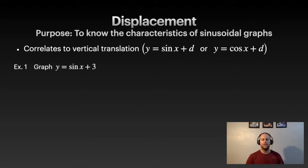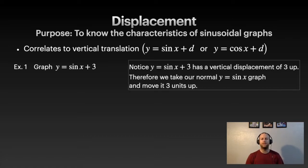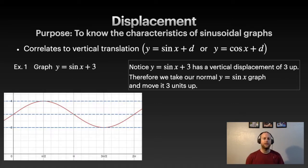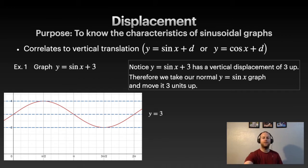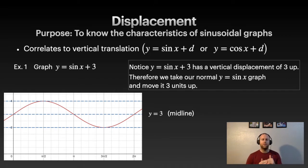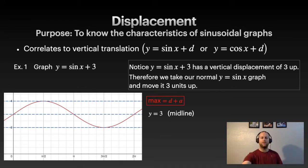Let's graph sin(x) + 3. With this we have a vertical translation 3 up, so we take our original sin(x) graph and move it up 3. I've put some dotted lines in because I want to talk about specific points. In the middle at y equals 3 is our midline — the point halfway between the maximum and minimum.